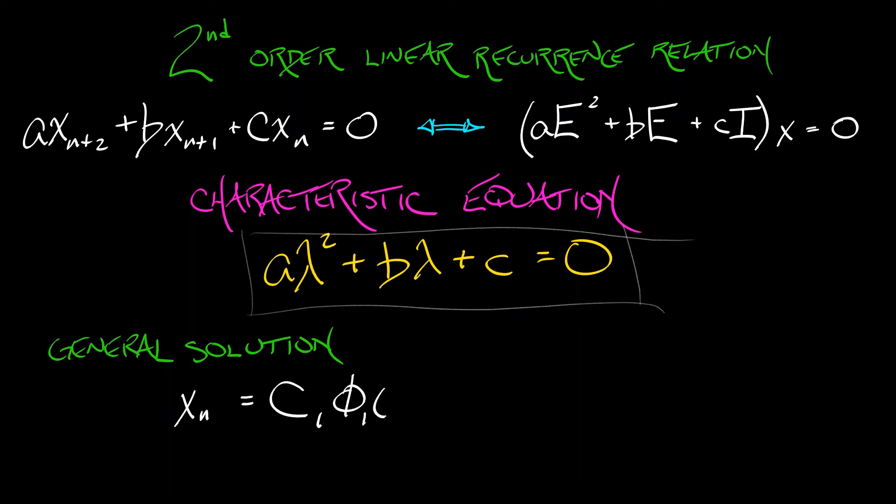xn is going to be expressible as c1 times φ1(n) plus c2 times φ2(n), where c1 and c2 are constants that depend on things like initial conditions. φ1 and φ2 are the discrete time basis solutions to this second order linear recurrence relation.